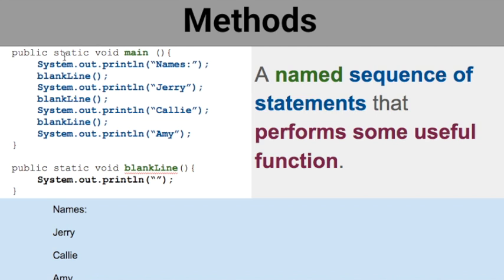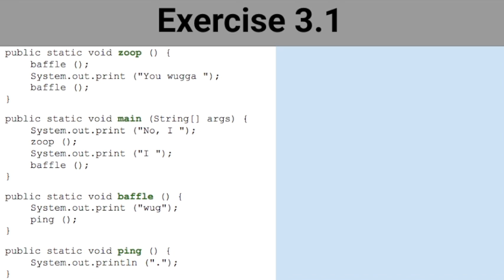I called the blank line method three times, and main has those additional print lines, which is why there are seven statements total. Now for exercise 3.1, you need to think in your mind what's going to happen and then type your output. You have to walk yourself through the code, and I'm going to start you off at the beginning so you see what you're supposed to do.